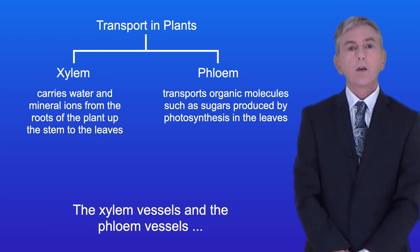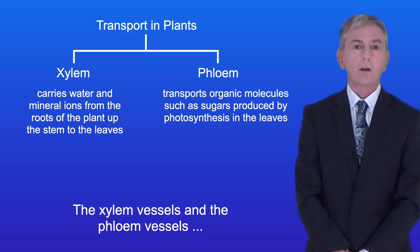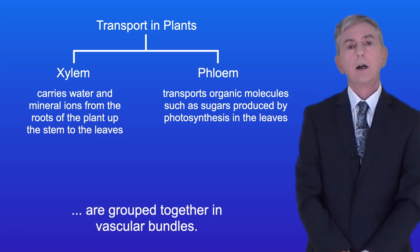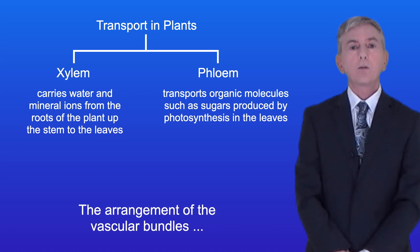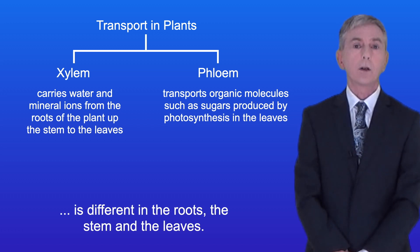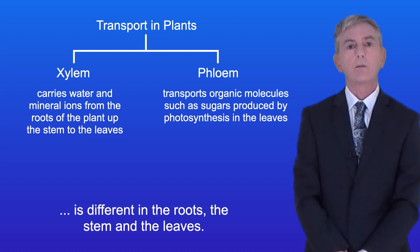The xylem vessels and the phloem vessels are grouped together in vascular bundles, and the arrangement of the vascular bundles is different in the roots, the stem and the leaves.